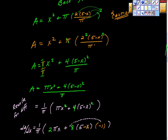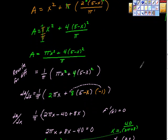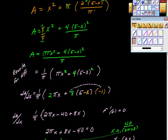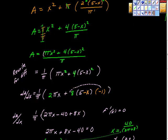I want to rewrite this a bit for purposes of differentiation. Think of it this way: there's a factor of 1/π out front, which I factored out. π is a number and will never go to zero, so it's just a constant multiplier. Pulling it out gives us A = (1/π)[πx² + (5 - x)²], setting us up nicely to take the derivative.